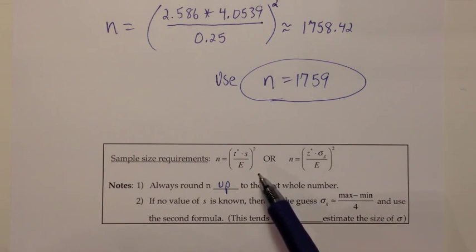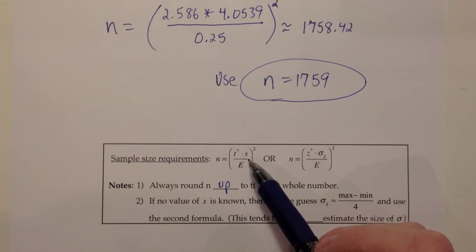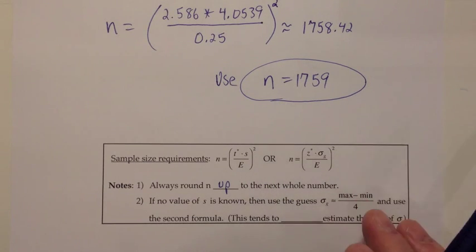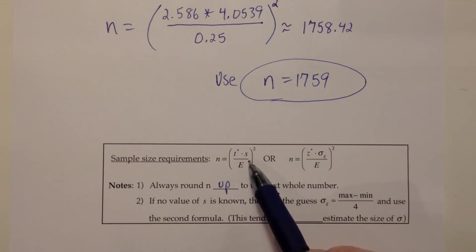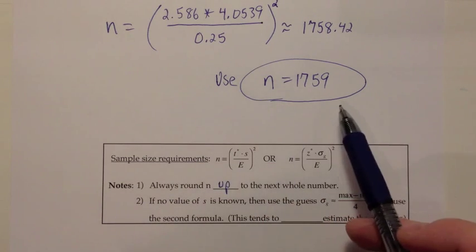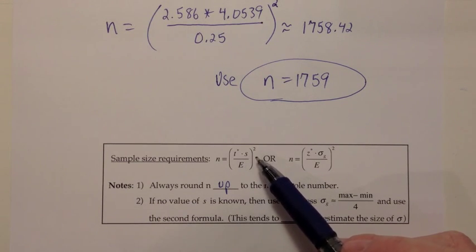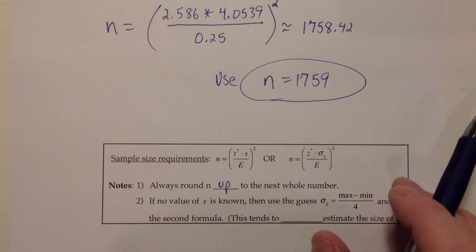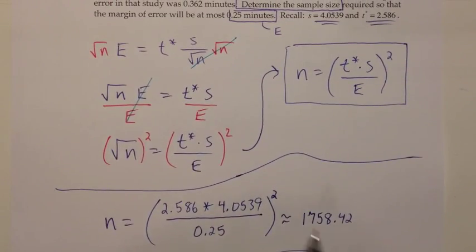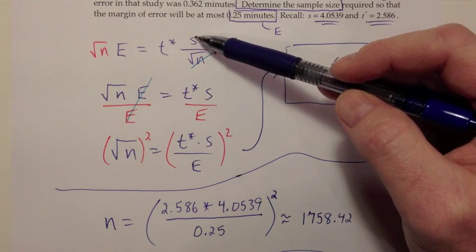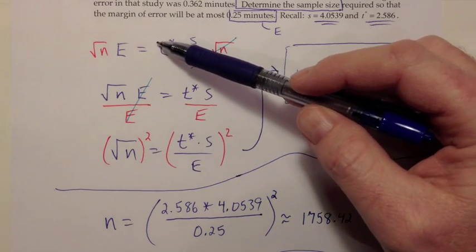But there is another situation that can arise. When we plug the S into that spot, that's because we had a sample from the previous example that produced that standard deviation. But if you think about this scenario where you're trying to figure out sample size, it doesn't actually make sense to have S already because that implies you have a sample already. This is supposed to be work that we do before the study takes place.